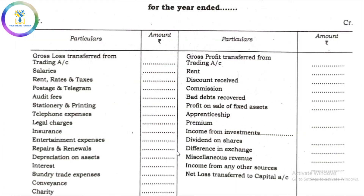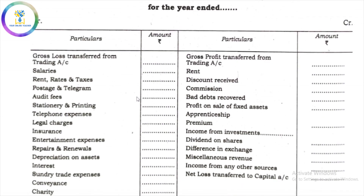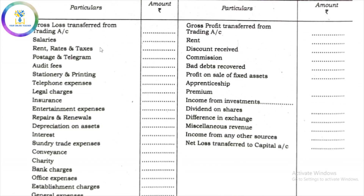So what is the format? Profit and Loss Account for the year ended — we start with the heading. Then on the credit side we put gross profit, and on the debit side we put gross loss.